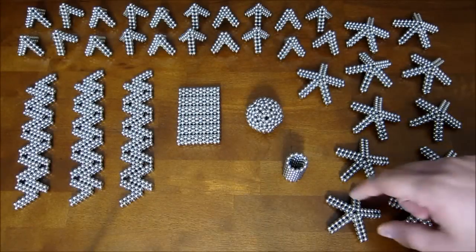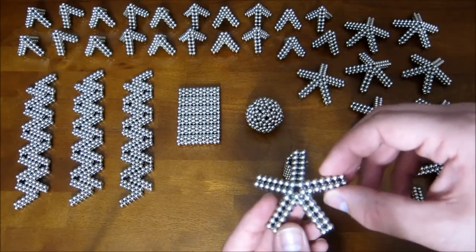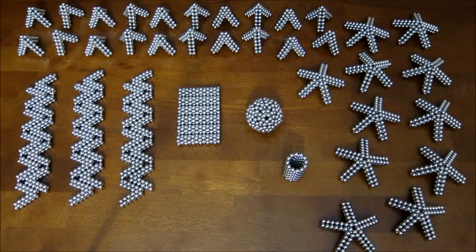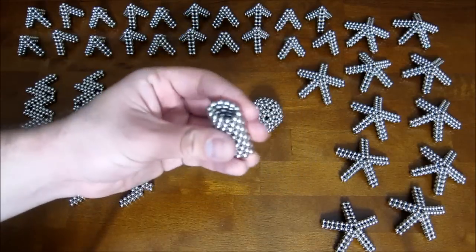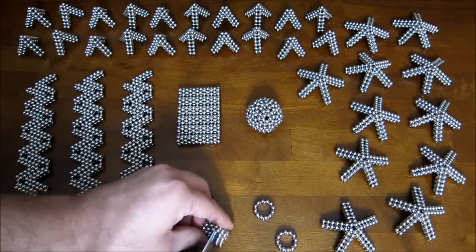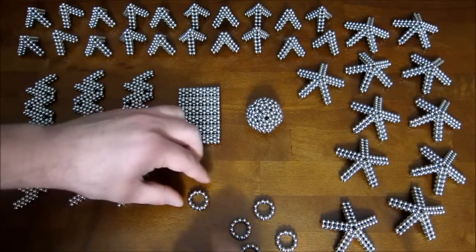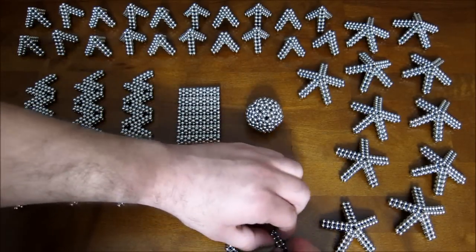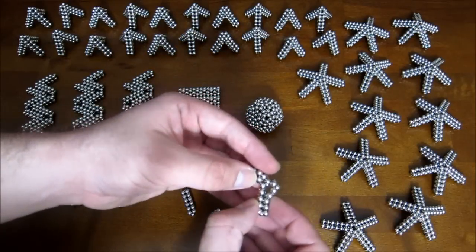You also need 12 of these. And the way you make those is you start out with 10 stacked rings of, again, 12 magnets per ring. And you cut them up into five long straight pieces. And flatten them out.